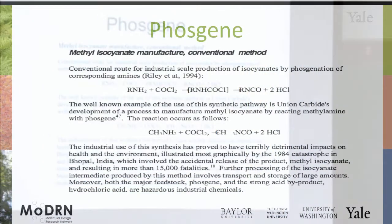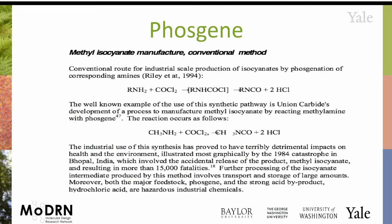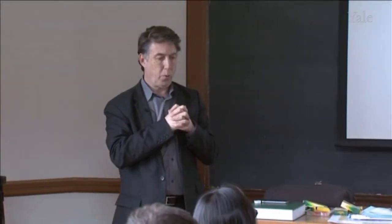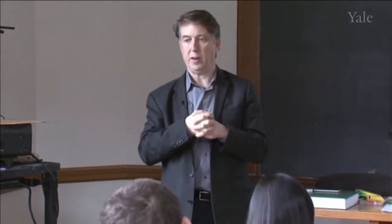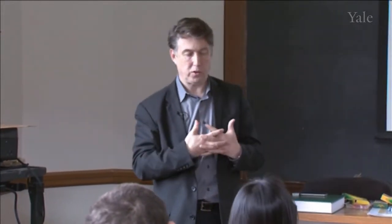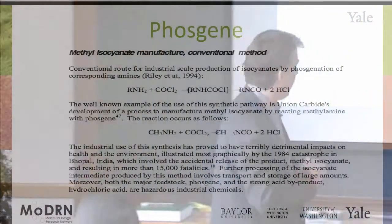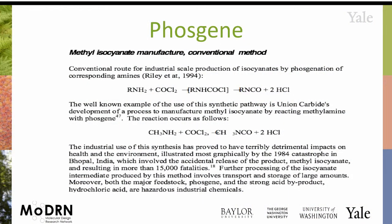To give one example — phosgene, which we all know is acutely lethal, is still used in very large-scale applications. So, methyl isocyanate: the way that you make methyl isocyanate on a large scale has always traditionally been done using large quantities of phosgene — the COCl₂ shown here — to make methyl isocyanate.